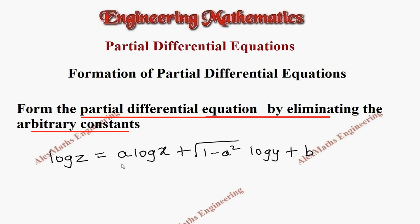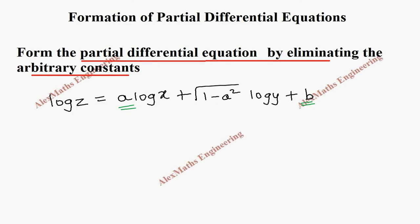So here we notice there are two arbitrary constants a and b. Let's write it here. Number of arbitrary constants equal to 2 and those are a and b.